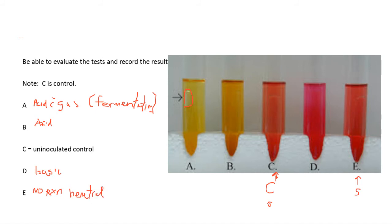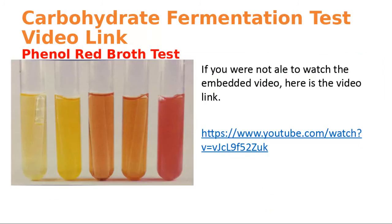With the carbohydrate fermentation test, also known as the phenol red broth test, we're looking for the ability of a microorganism to utilize the sugar — whatever that sugar might be. Every single bacterium has certain constitutive enzymes, meaning they're already part of the genetic makeup of the organism, so they can break down certain things but not everything. I have a video link available — if you can't see the embedded video, put the link in your browser or check my YouTube channel.